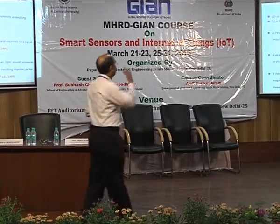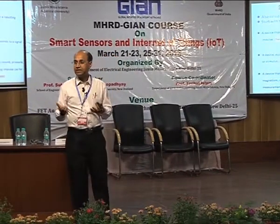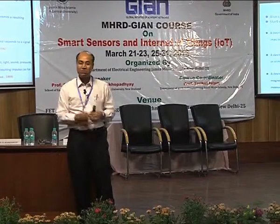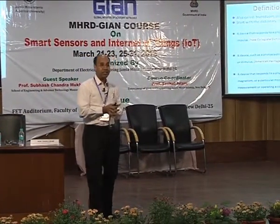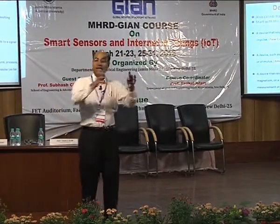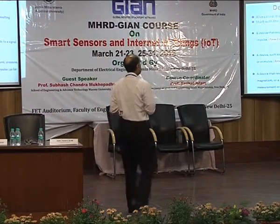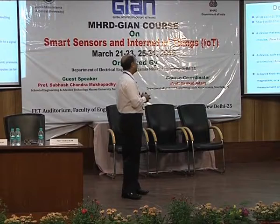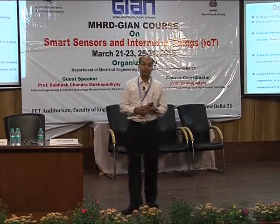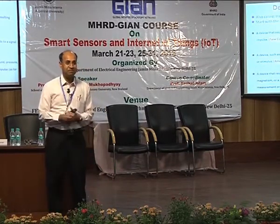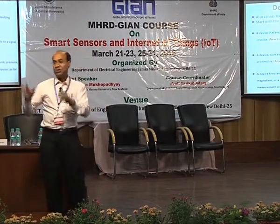If you see the dictionary, you will find that sensor means different things — some say detector, some say pick-up, like an eddy current pick-up coil. Transducer is not exactly the sensor. Some say probe, but probe usually means an oscilloscope probe. According to the New College Dictionary, a sensor is a device that responds to a physical stimulus and transmits a resulting impulse. If you tell this definition outside your engineering domain, people may not understand — they need to know what exactly the stimulus and the impulse are.